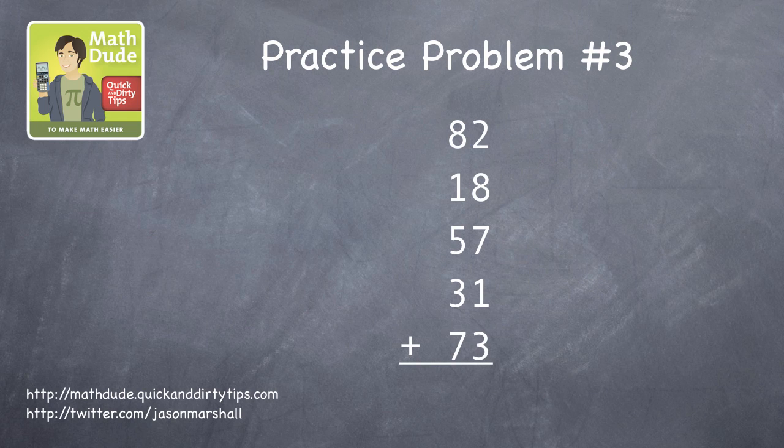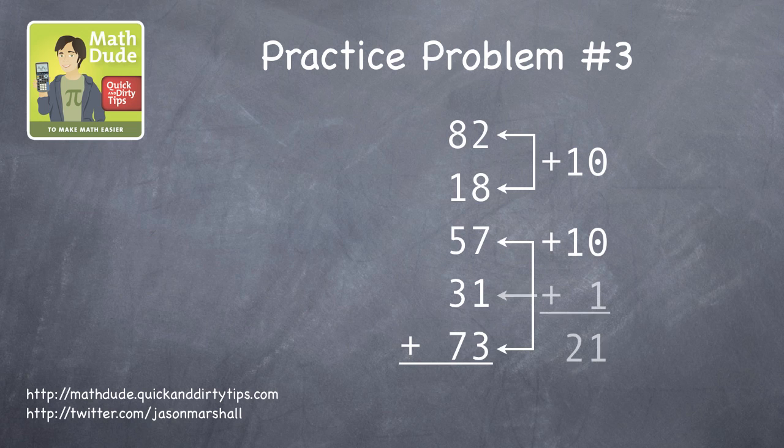On to a little bit of a tougher problem, but it's really the same thing. Look at the ones column for pairs of numbers that add to 10. 8 and 2 is 10, 7 and 3 is 10, so that's 20, plus 1 is 21.